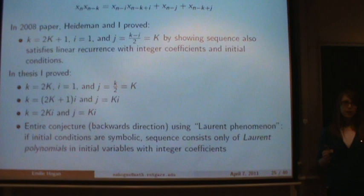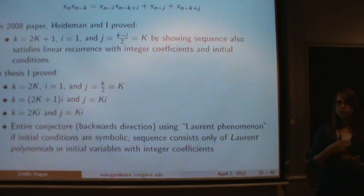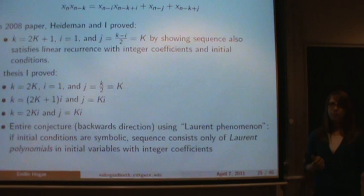The Laurent phenomenon says that if the initial conditions are now formal variables—they're not just numbers, they're some variable x_i—if we can show that the sequence is now Laurent polynomials rather than integers, we'll have the integer property for free. Because Laurent polynomials are rational functions with the denominator being just a monomial with no coefficient, so if we let the initial variables be 1, we get an integer.